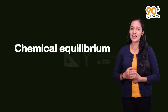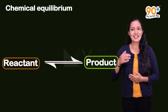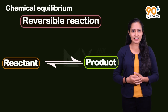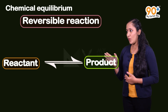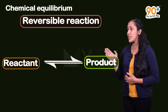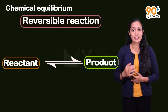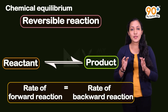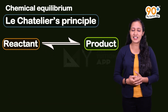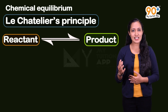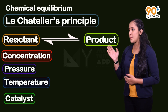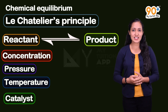Moving on to the next important topic: chemical equilibrium, that is raasasandhul. This involves reversible reactions, also called ubayah dhishapraverthanam. Important factors affecting chemical equilibrium are concentration, pressure, temperature, and the presence of a catalyst.